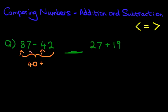How about the units? We've got 7 minus 2. 7 minus 2 is 5. So therefore this becomes 45. So on the left hand side, this equation represents 45.